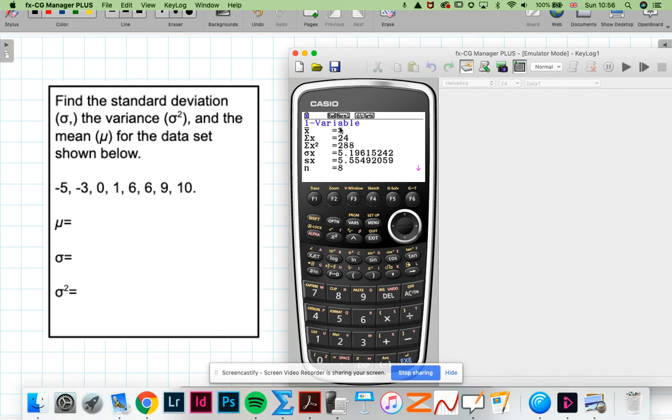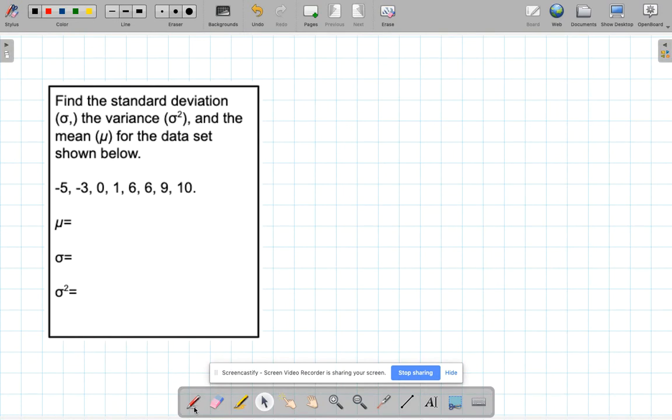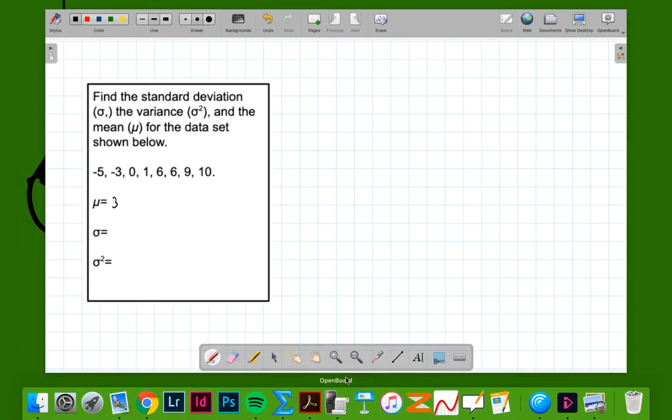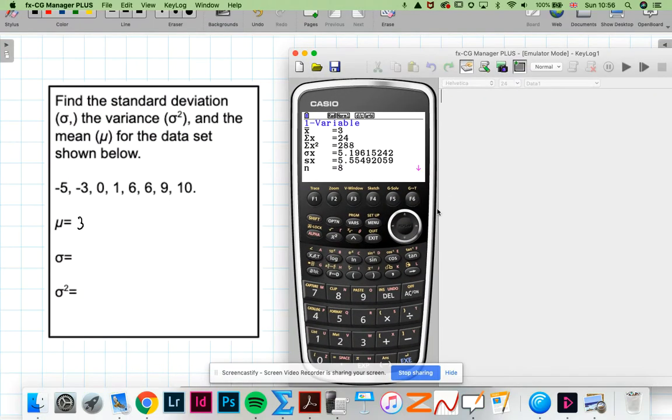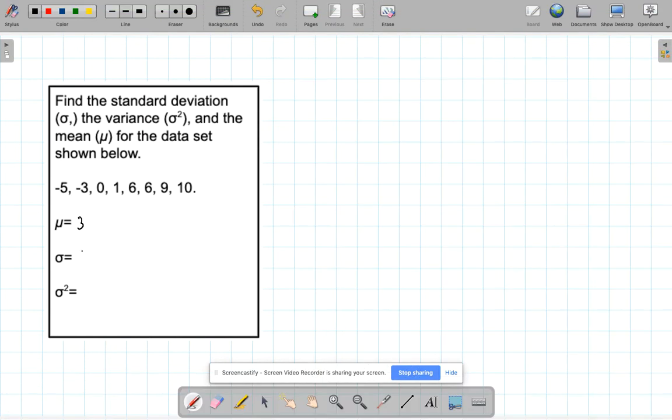So the mean is given by x bar, which is three. So there's my mean. My standard deviation is given here by the sigma. Now this is the standard deviation for the list of numbers. The sx is something a little bit different. So we're going to take this one. The sigma x standard deviation is 5.20 if we round that off to two decimal places.